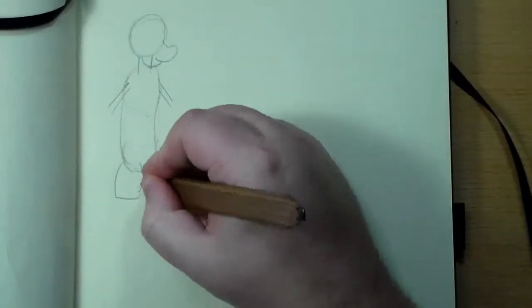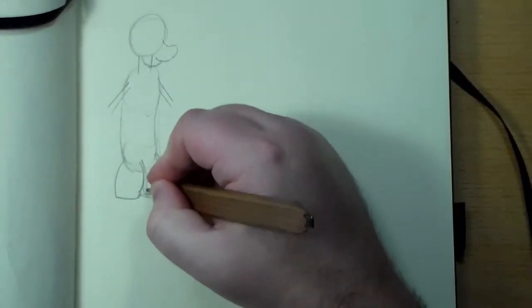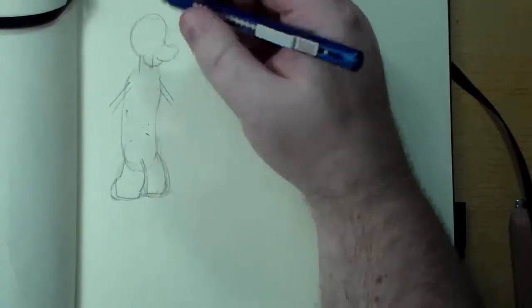...a head shape—one circle for the head. You come down about a half circle and draw three circles, and half of that bottom circle is where you round out the bottom of him.